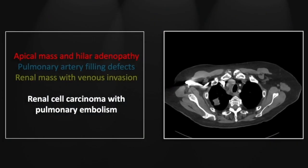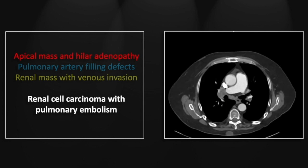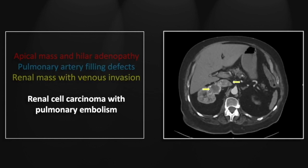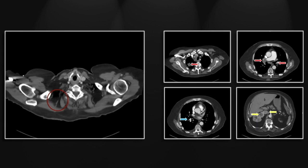Our next case is a renal cell carcinoma with pulmonary embolism. There is a hypodense nodule in the right upper lobe, obviously concerning. There are hilar hypodense nodes consistent with metastatic disease, and a filling defect of a pulmonary embolism. Inferiorly, there is a hypodense heterogeneous renal mass extending into the right renal vein and inferior vena cava — a classic renal cell carcinoma with venous extension.